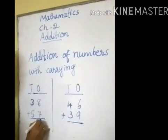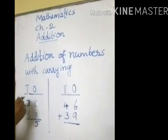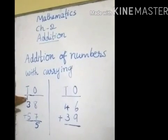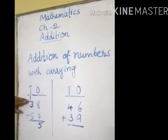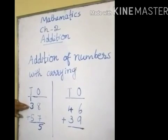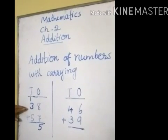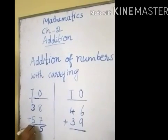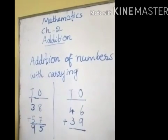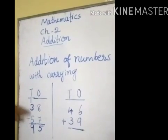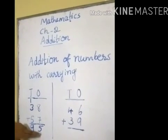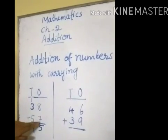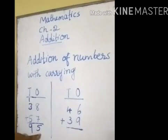That is right. 5 in ones column. And here we add 1 on tens column. 3 plus 1 is equal to 4. And 4 plus 5 is equal to 9. Now, 9 tens and 5 ones. That means, 38 plus 57 is equal to 95.